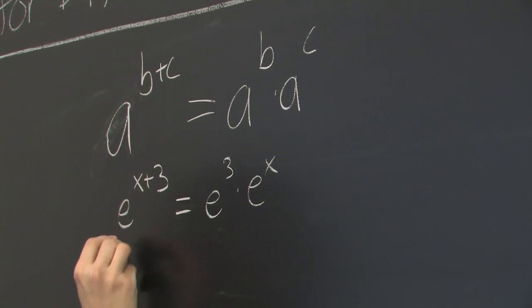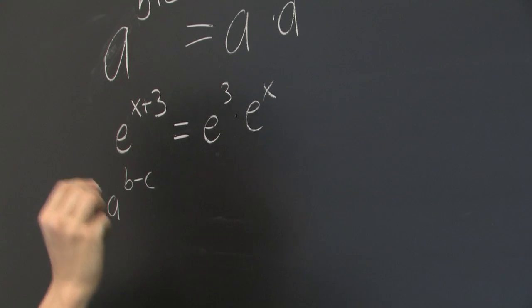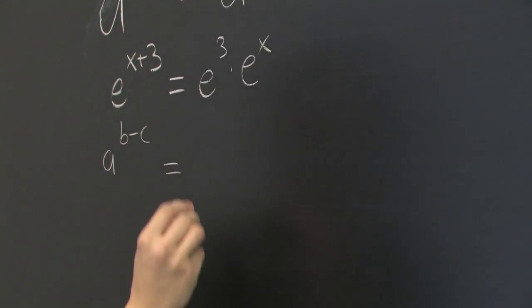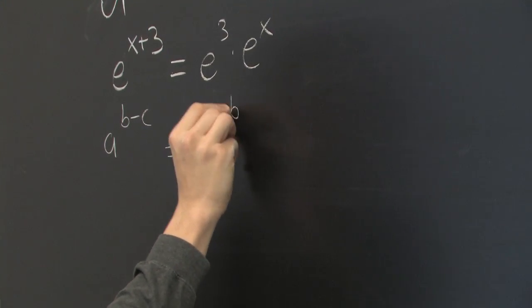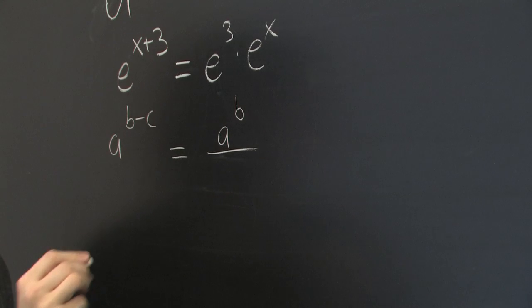Similarly, if we have a to the b minus c, this is equivalent to a to the b divided by a to the c.